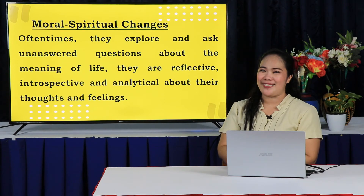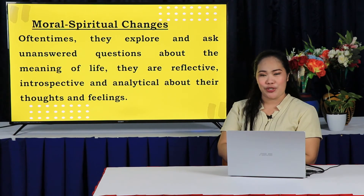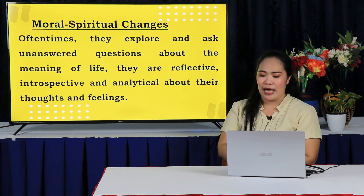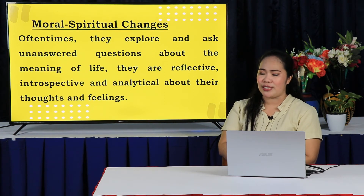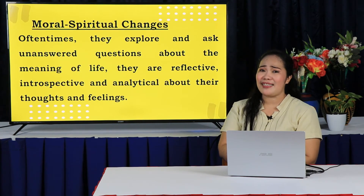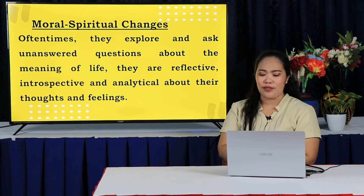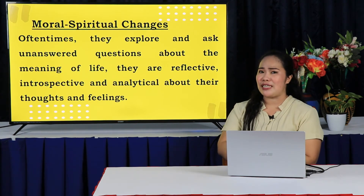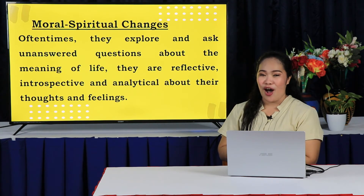For moral and spiritual changes, adolescents explore moral and ethical issues. They often ask unanswered questions about the meaning of life. They are reflective, introspective, and analytical about their thoughts and feelings. They depend on influences of home and religious institutions in moral and ethical choices and behavior. They try to find out who they really are, analyze their strengths and weaknesses, learn to accept and like themselves, and begin to distinguish between rules that are negotiable and non-negotiable.